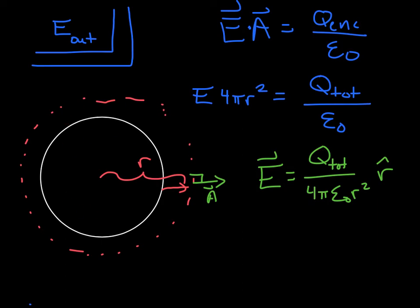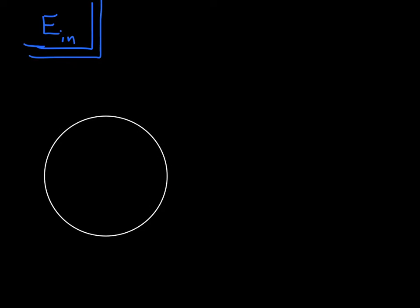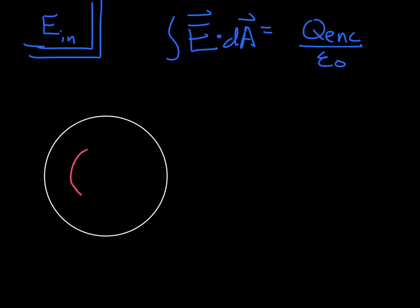So let's see what happens inside. So inside, this is a little bit different. Again, we'll start with Gauss's law, just as above. Except now, this is our Gaussian surface, a distance little r. And our total distance is big R.